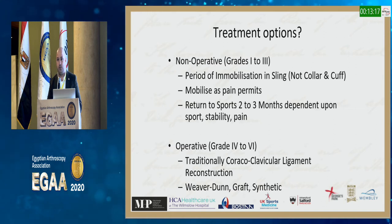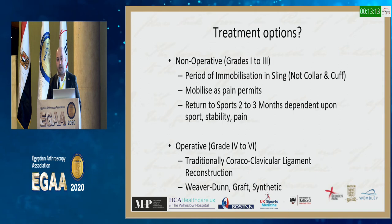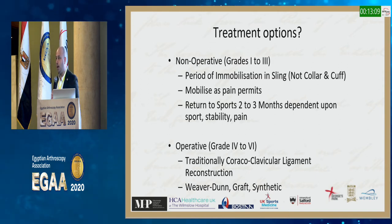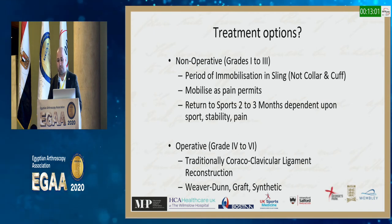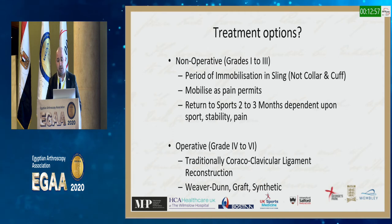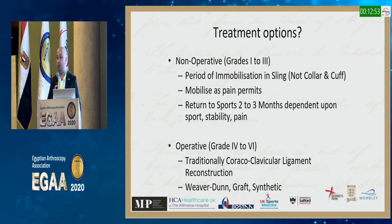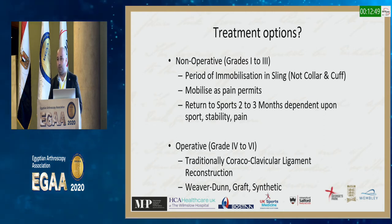The Rockwood classification has been the foundation on which we've built all our treatment algorithms. Grades one, two, and three are generally treated non-operatively; grades four, five, and six we operate on. Non-operative treatment is not just saying 'you'll be fine.' They need formal immobilization with a broad-arm supportive sling — rather than a collar and cuff — simply to support the weight of the arm, then mobilizing as pain permits. Return to sport is typically two to three months, dependent on stability rather than pain.